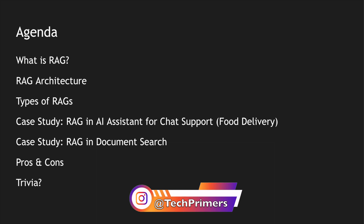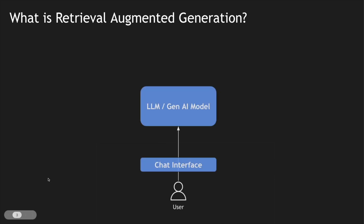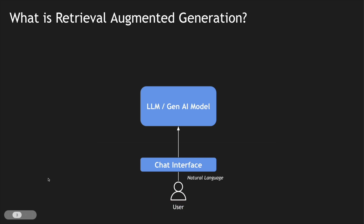Finally, I'll end with a trivia question which you can answer in the comment section below. So what is RAG? In a typical AI use case, consider an example where we have a chat interface where a user is interacting with an LLM or a Gen AI model. Maybe we use an existing model or trained a new model. We interact with this model using natural language — we use prompts to make it better, and there are prompt engineers who are improving the LLM by giving specific prompts.